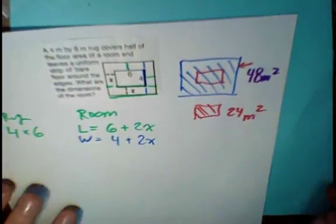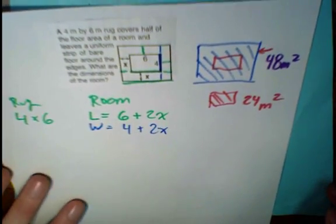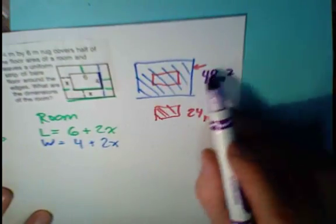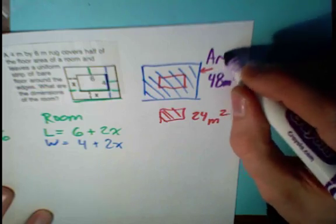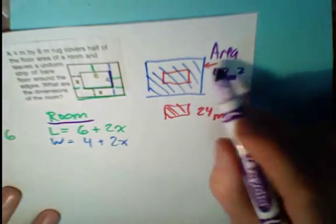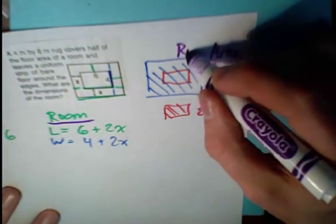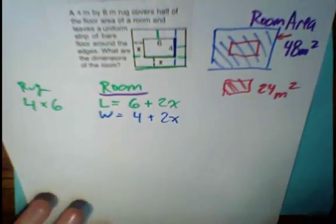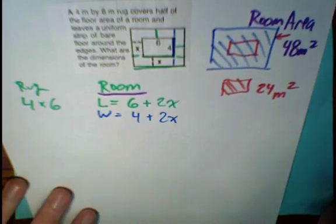Now we have enough information to solve this problem. We have the dimensions of the room, length and width of the room. We also have the area of the room. Notice that I'm clearly labeling everything room area. Room area and the length and the width. So now we're going to write our equation.